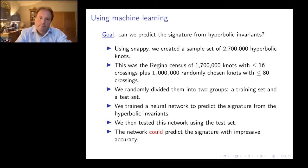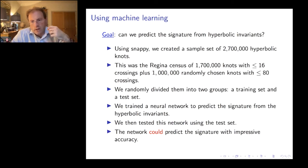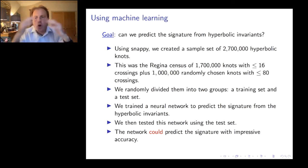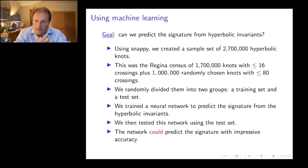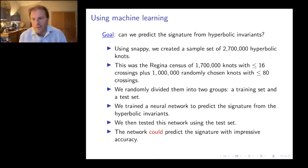The conclusion was that the network could predict the signature with impressive accuracy. This was not obvious — it shows that something interesting is going on. If there had been no connection between the hyperbolic invariants and the signature, no neural network could have predicted it. The fact that it could shows there is a connection between those two fields. The question is: what is that connection? How are the hyperbolic invariants controlling the signature?